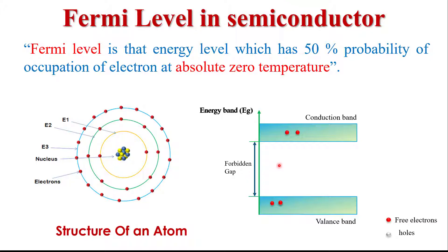Fermi level is an energy level which exists between the valence band and conduction band. It has 50% probability of occupation of an electron at absolute zero degree temperature. Fermi level can exist anywhere between the conduction band and valence band — it can be near the conduction band, near the valence band, or at the center between the two bands.